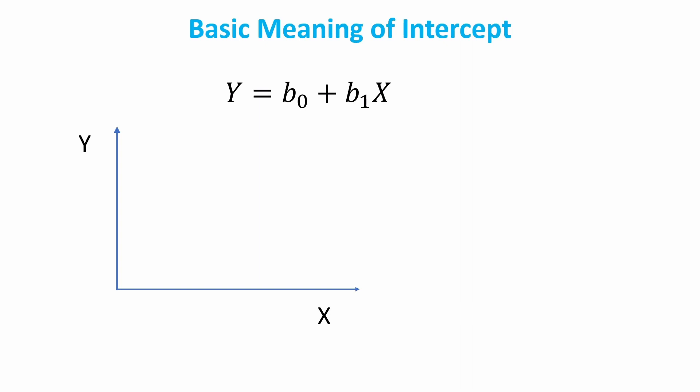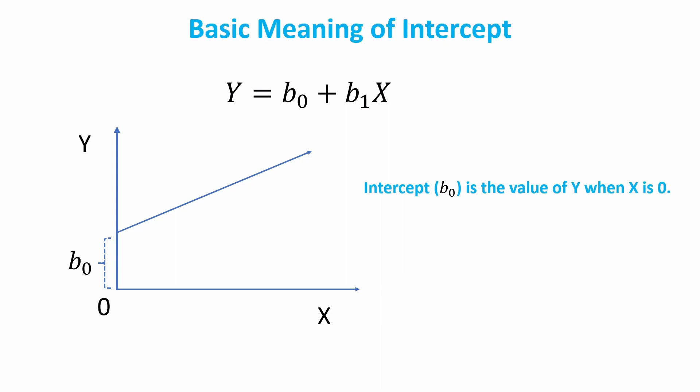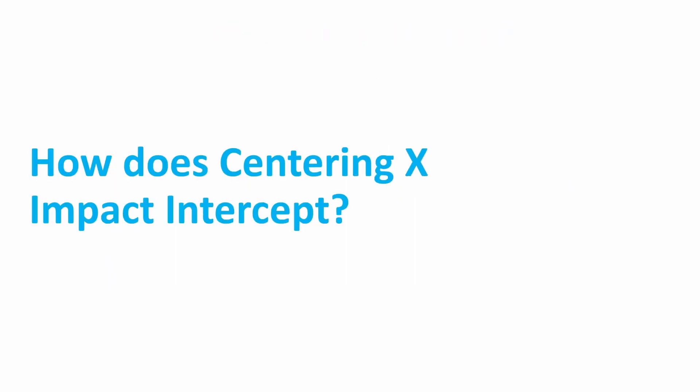This is the XY framework we always see. This is the point zero, and this is the regression line. In this case, the intercept b0 is the value of y when x equals zero. That's the basic idea about the intercept. Another question is: how does centering x impact the intercept?